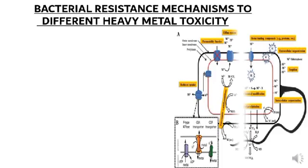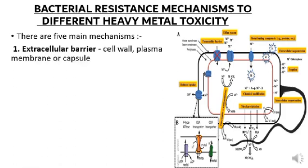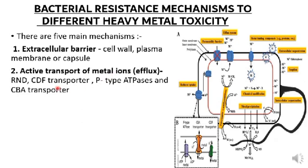Bacterial resistance mechanisms to different heavy metal toxicity: there are five main mechanisms by which bacteria show resistance to heavy metals. The first is the extracellular barrier, which involves the cell wall, plasma membrane, or capsule — the cell wall basically prevents metal ions from entering the cell. The second is active transport, or efflux, of metal ions outside the bacterial cell, which involves RND, CDF transporter, P-type ATPase, and MV transporter.